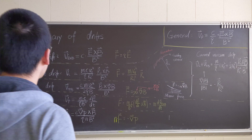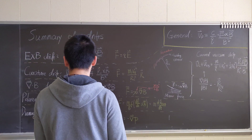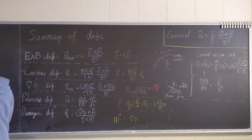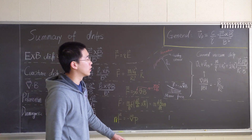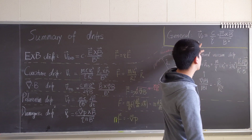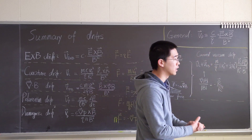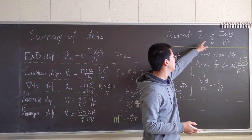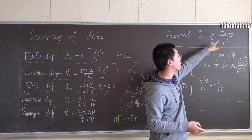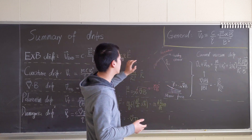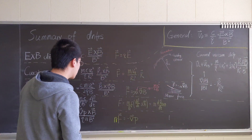Let me talk about the drifts that I know. From the general solution of guiding-center drifts, we got this general formula: c over q, F cross B over B squared. We're going to use that for most of these cases.